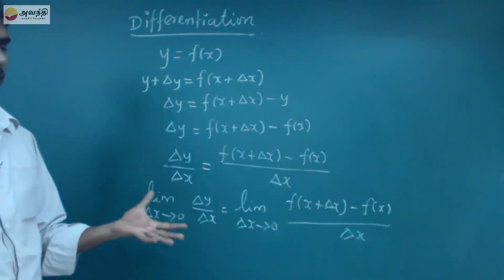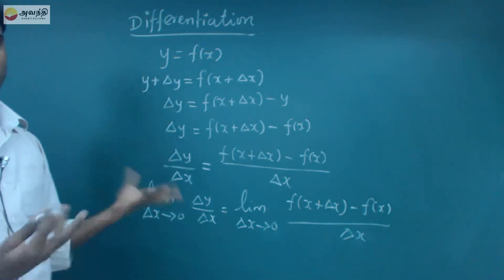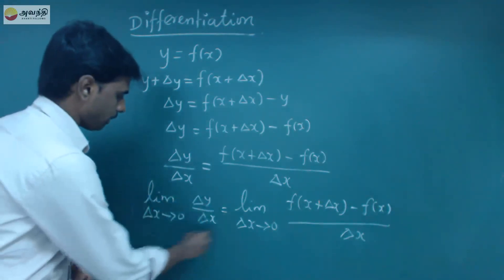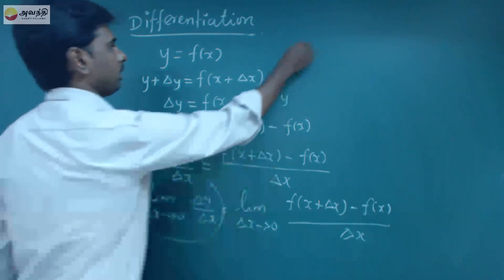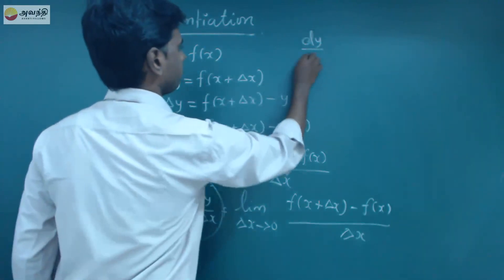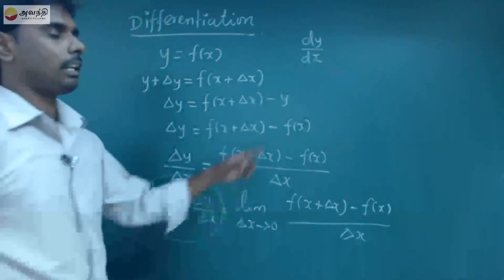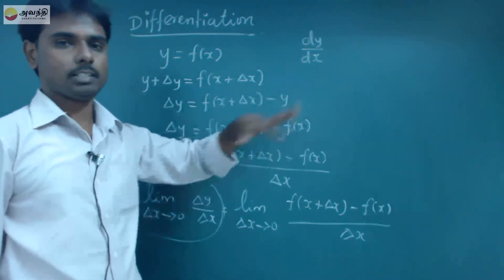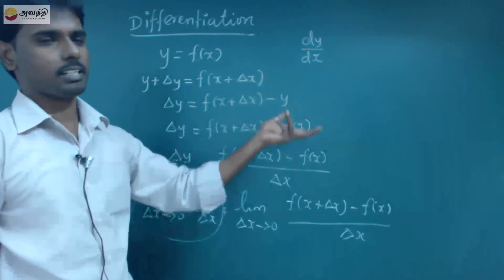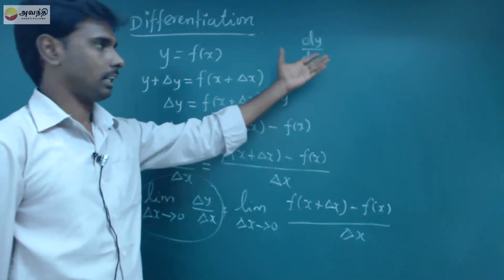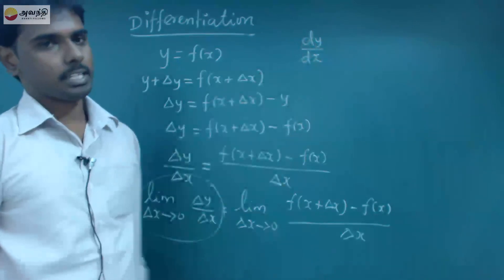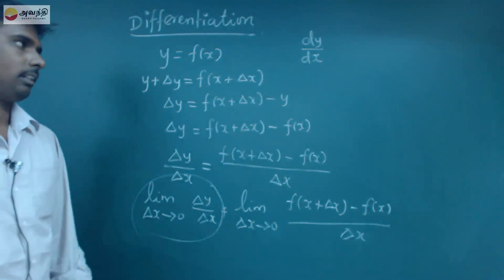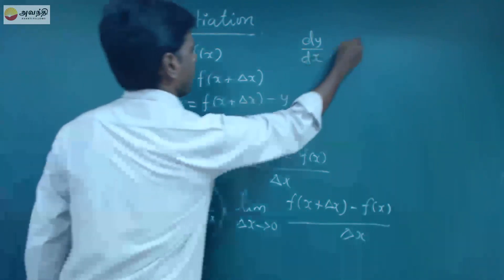Why is it differentiation? It will be different — that is differentiation. In mathematical notation, we write dy by dx. So if x changes, the variable increases or decreases — something changes — and the change in y with respect to x is differentiation, written as dy by dx.